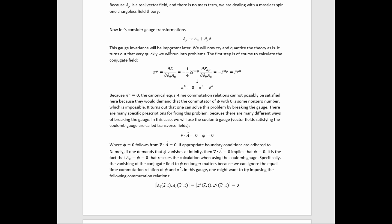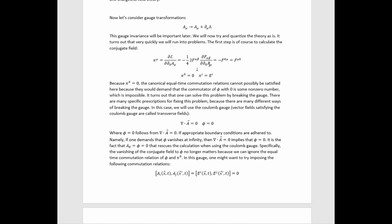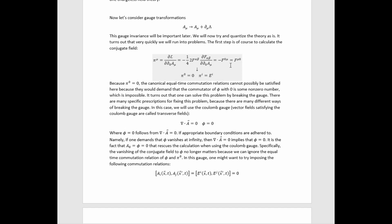This gauge invariance will be important in a minute. We will try to quantize the theory as is, but very quickly we will run into problems. The first step of quantization is to calculate the conjugate fields. We have one for each component of the vector potential. But since F_μν is an antisymmetric tensor, if μ equals 0, then the whole thing equals zero. So we have π^0 equals zero and π^i equals the electric field. Because π^0 equals zero, the canonical equal-time commutation relations cannot possibly be satisfied.